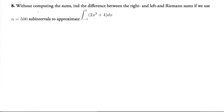Without computing sums, find the difference between the right and left Riemann sums if we use 500 subintervals to approximate the integral from negative 1 to 1 of 2x cubed plus 4 dx.